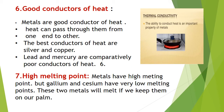Metals are good conductors of heat. We use articles made up of iron, aluminum, and copper in our kitchen in daily life. When we heat these articles, heat can pass from one end to the other. The best conductors of heat are silver and copper. Lead and mercury are comparatively very poor heat conductors.